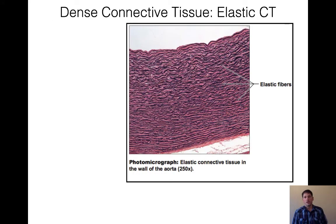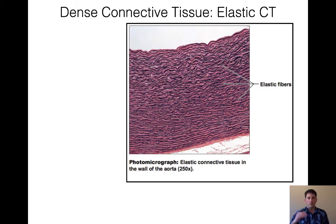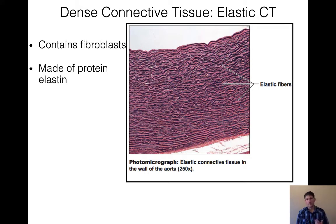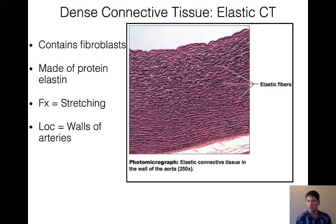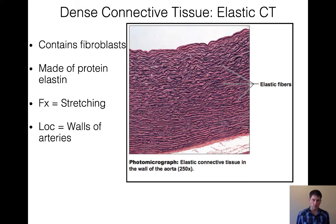Our next dense connective tissue is elastic connective tissue. You can see these great examples of elastic fibers — really wavy and dark-staining — which are able to stretch and recoil. That is the function of this tissue. We find it in arterial walls, which need to resist blood pressure by expanding and then recoiling.